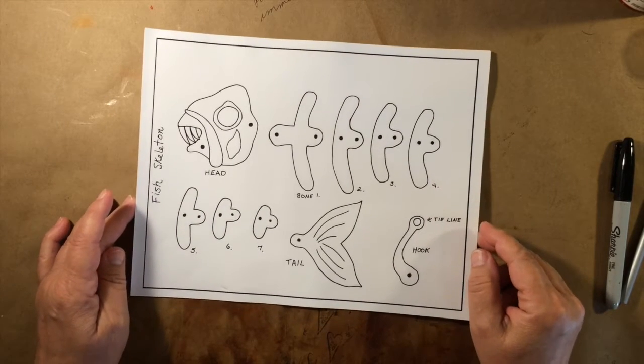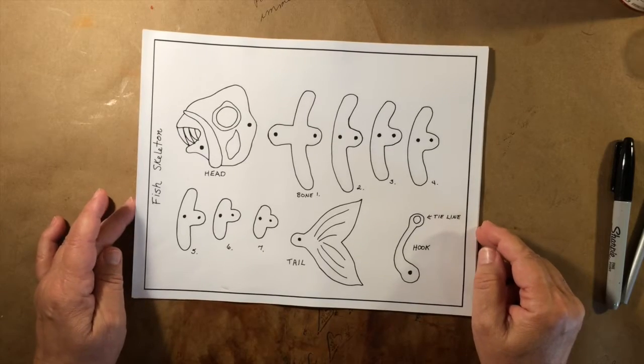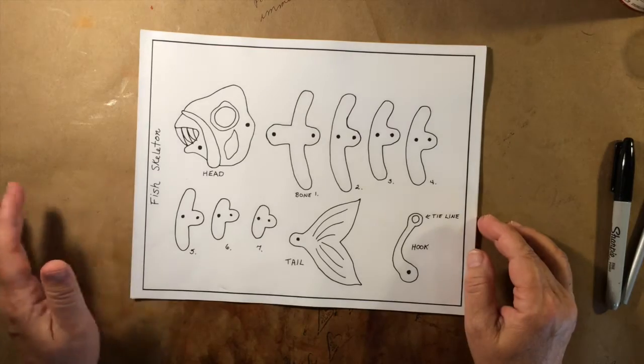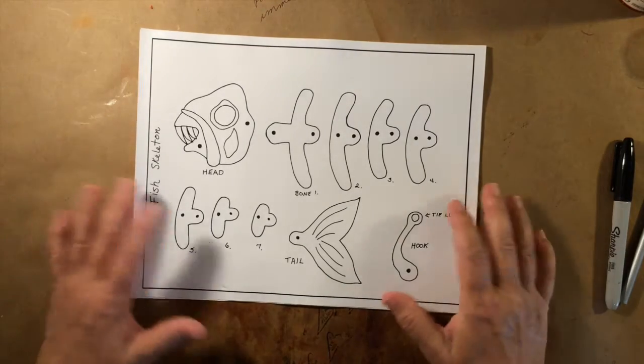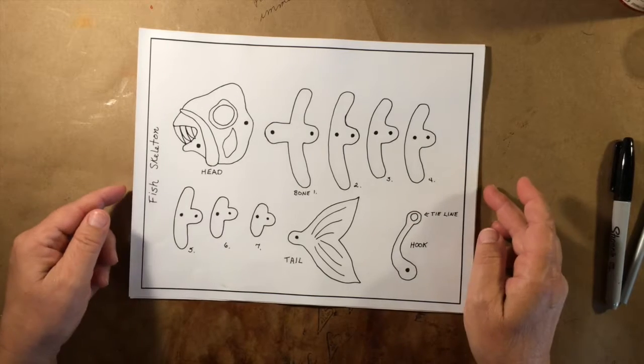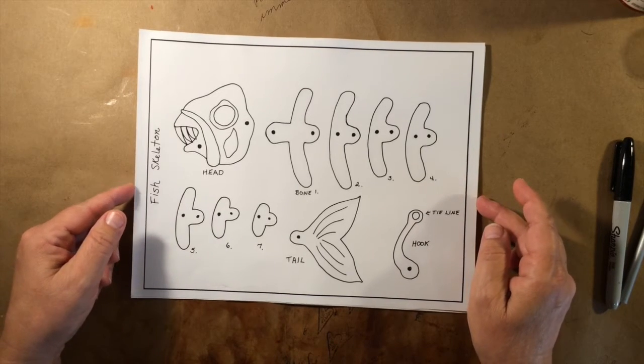Hello, this is Jan from the Fuzzy Duckling bringing you one more Halloween project for this year. There's not much time, Halloween's right around the corner, but there's always time for a little bit more fun in the art world. Today we're going to make Bones, a fish skeleton.